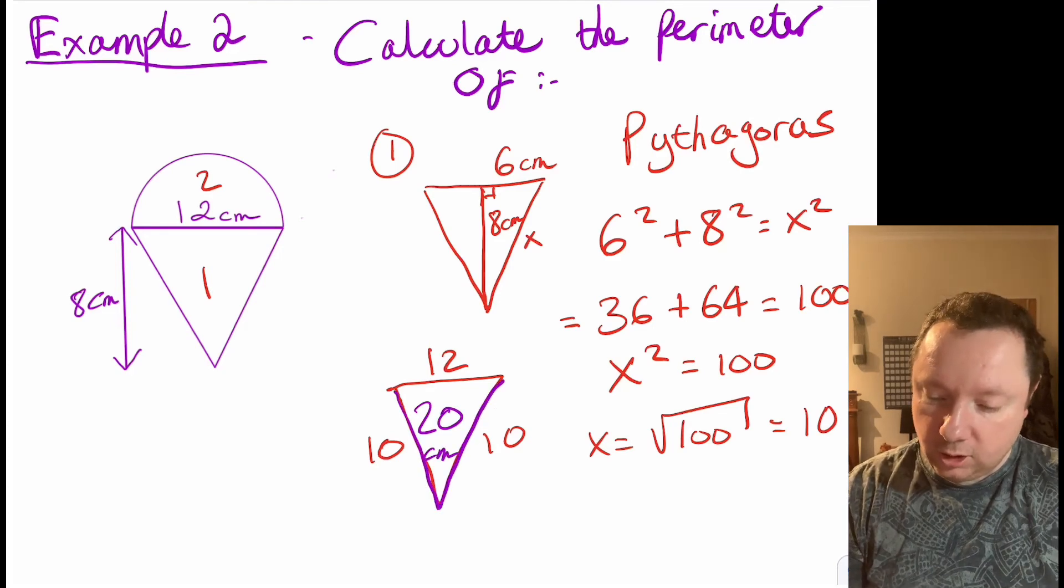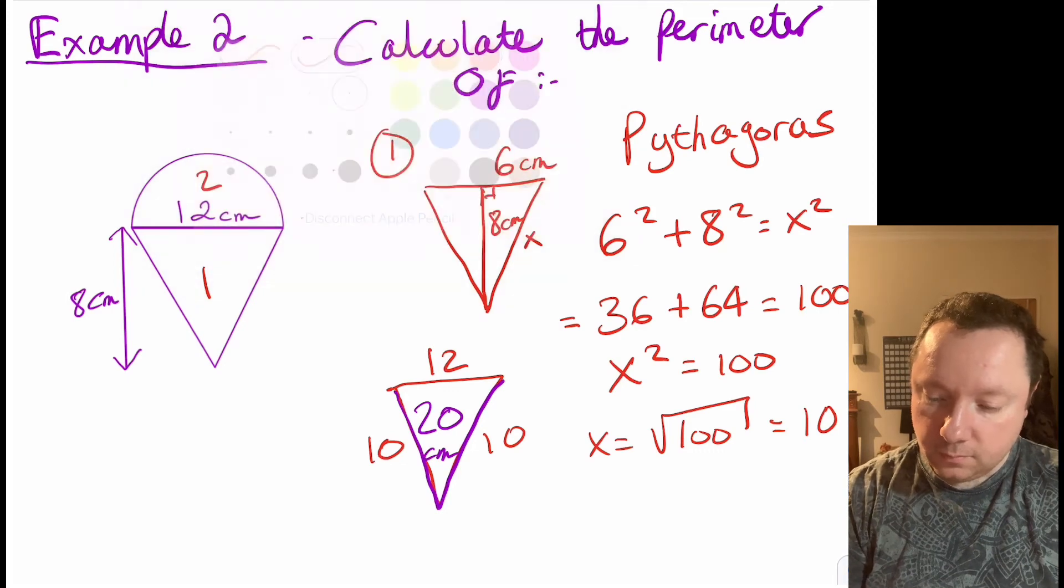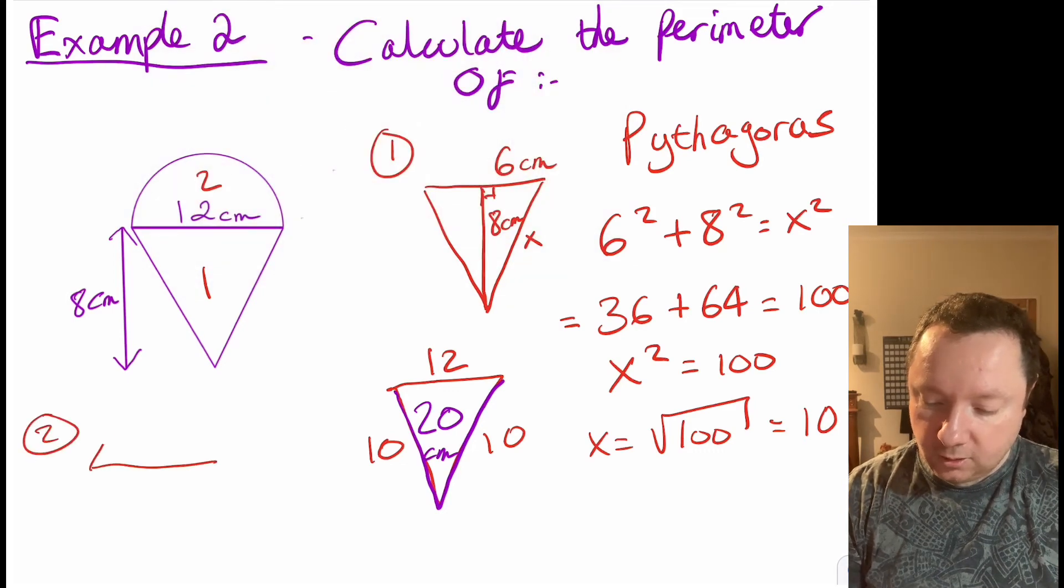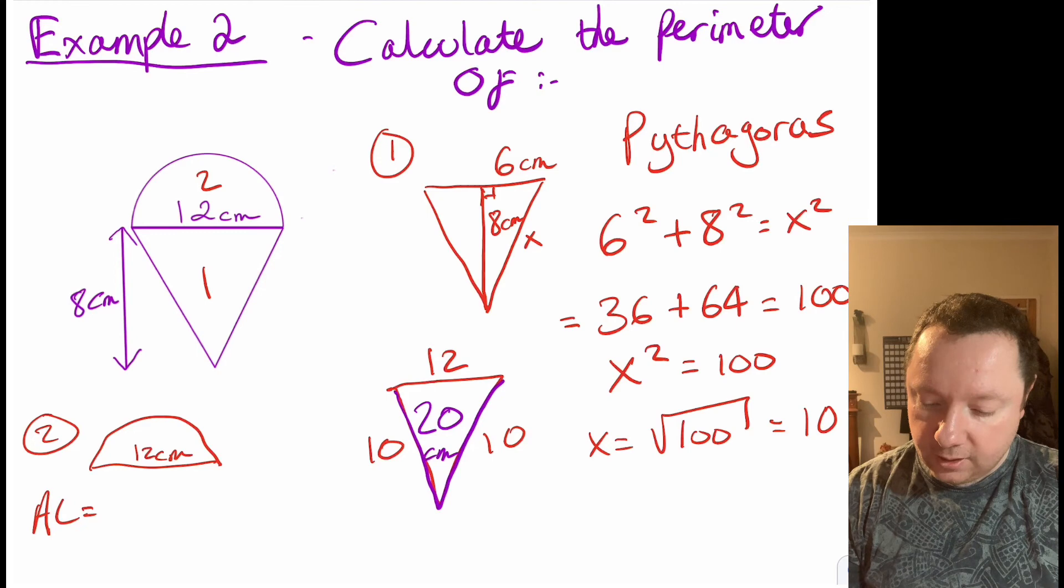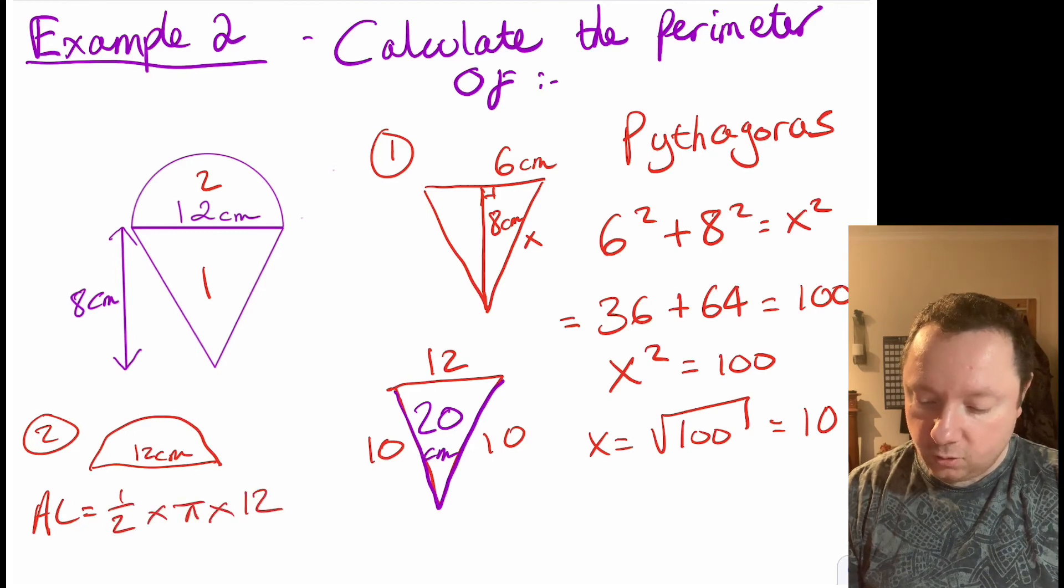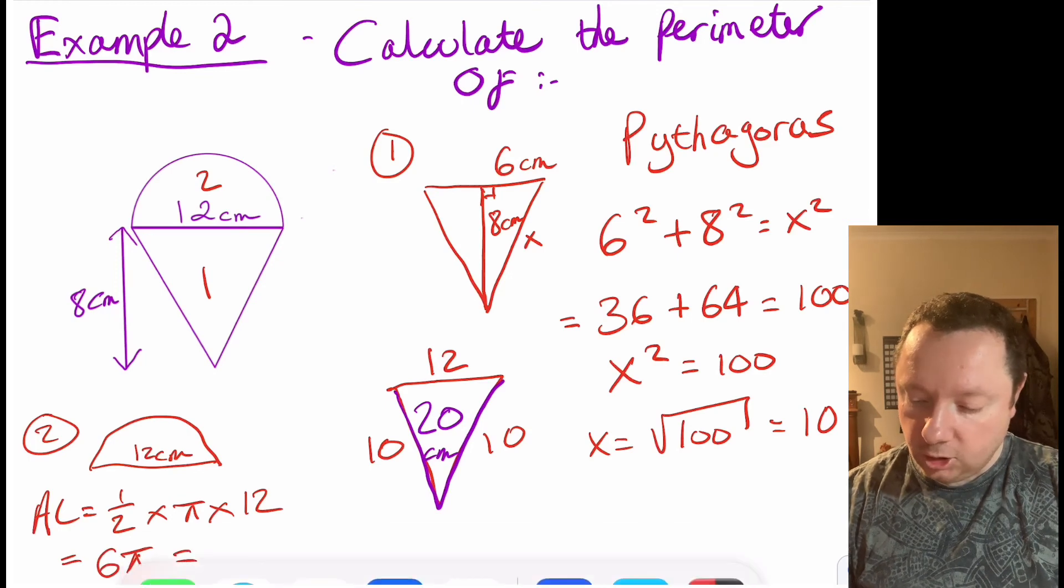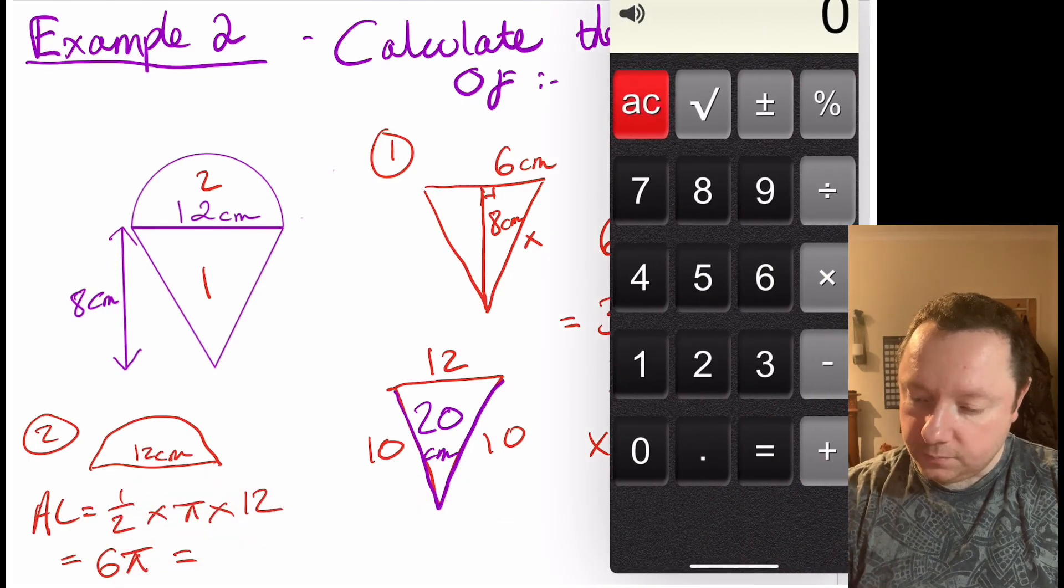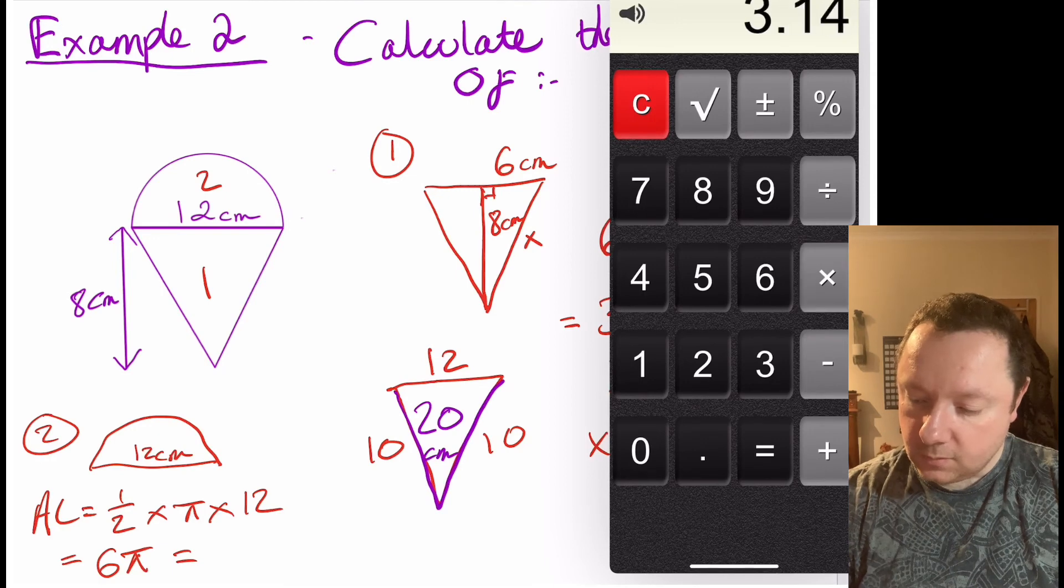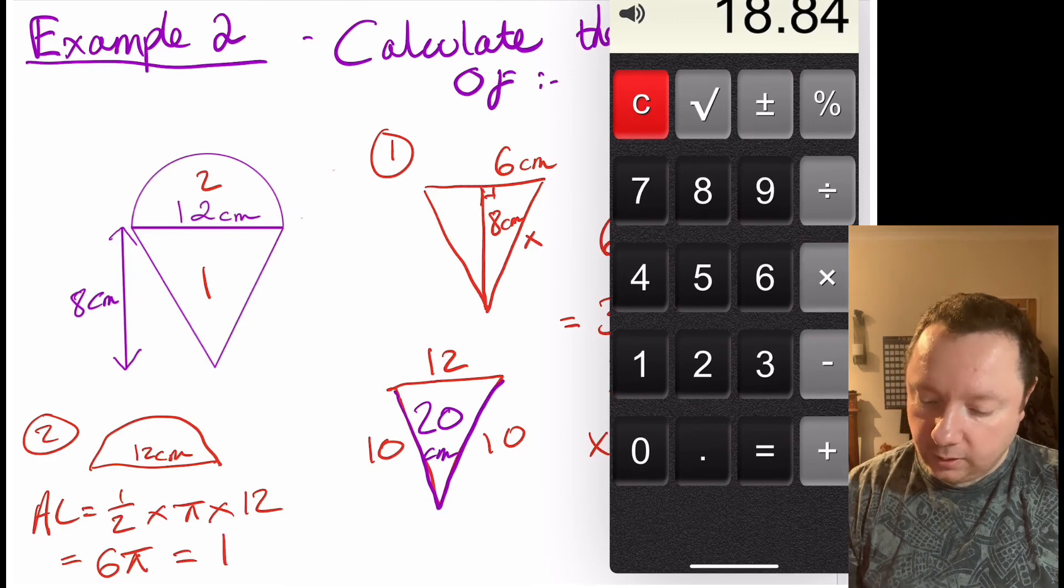So now we'll look at shape 2. Shape 2 is a little bit easier because it's just the semicircle. So we just want the arc length. So remember the arc length is a half times pi times the diameter of 12, which is 6 pi, which using a calculator gives us 18.84.